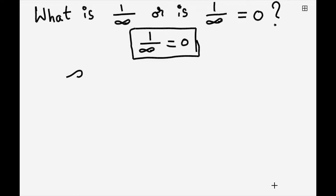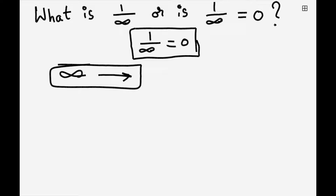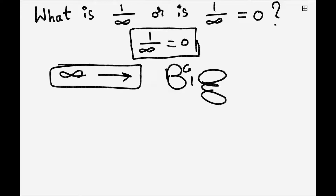Infinity is not a number — it's a kind of number. We haven't defined infinity yet. Infinity is something which is very, very massive, very, very big. If you try to understand a fraction, here we have one by infinity.